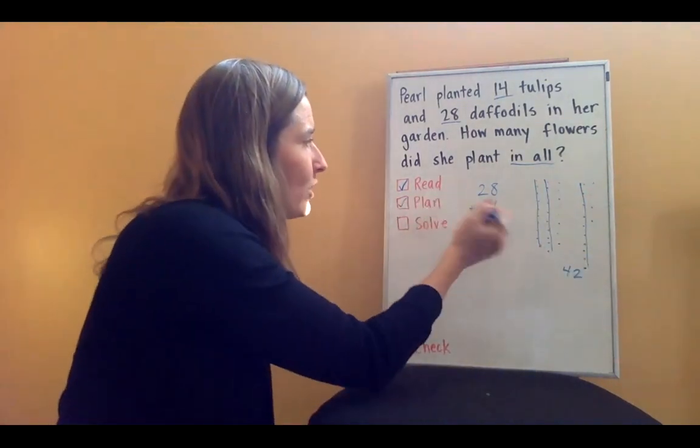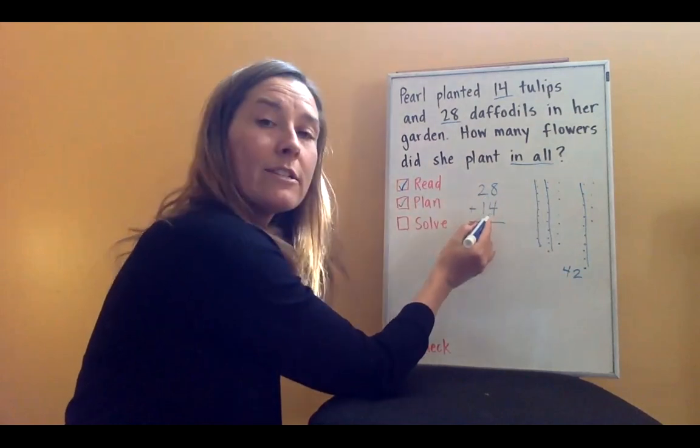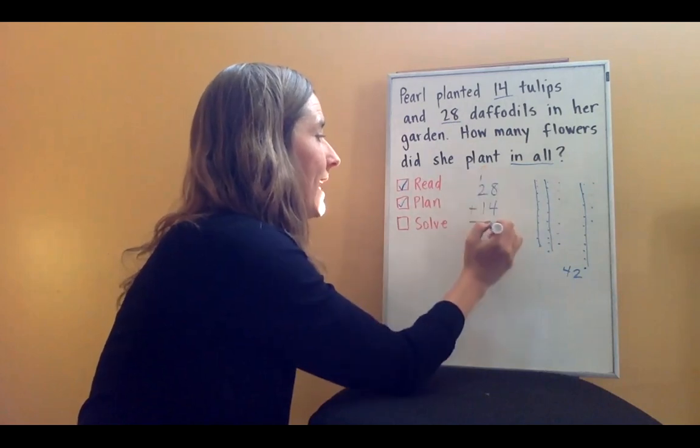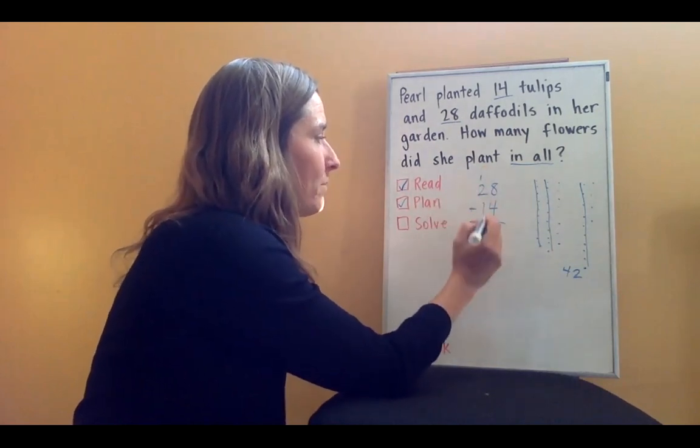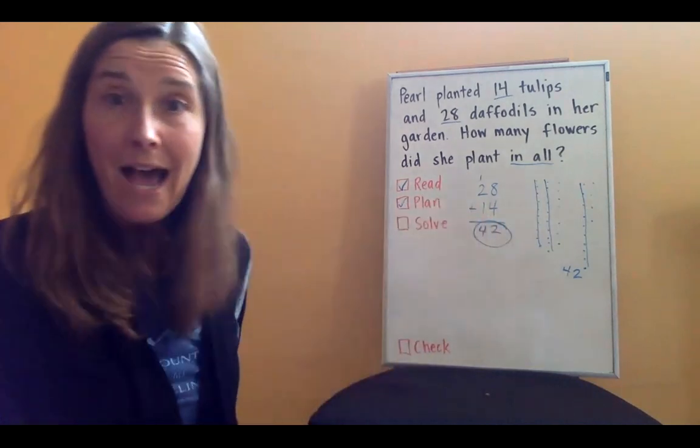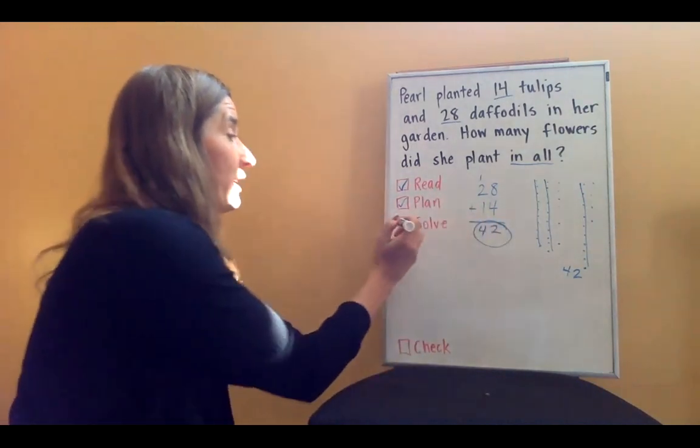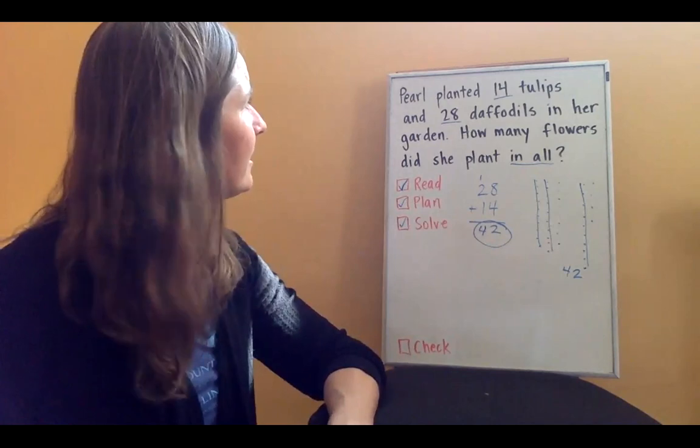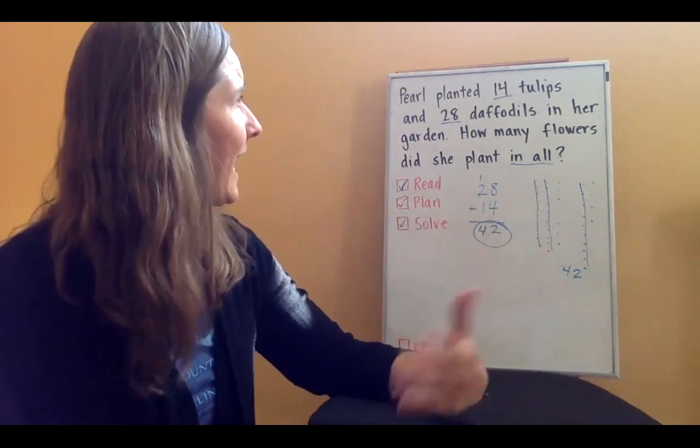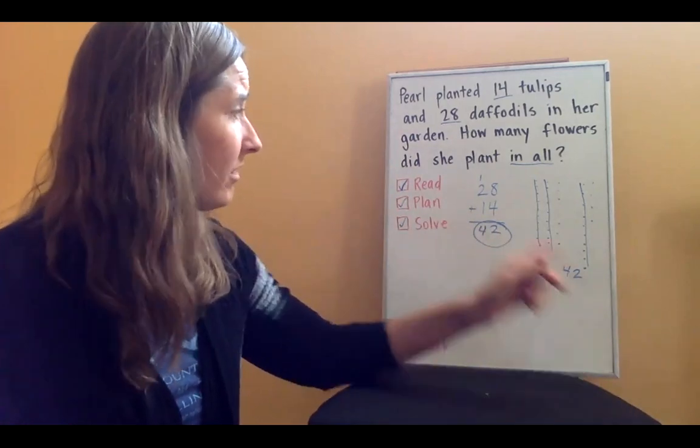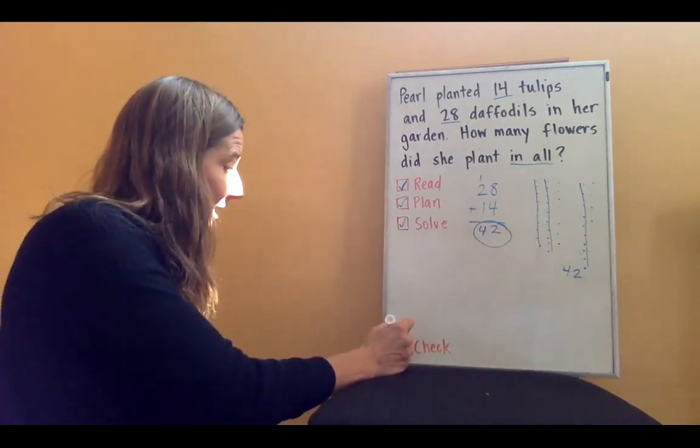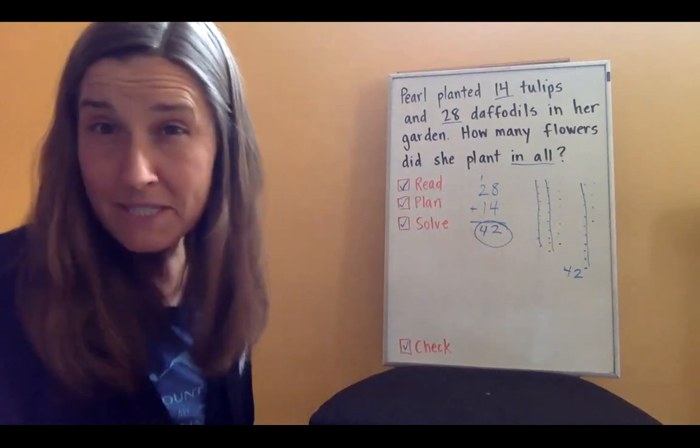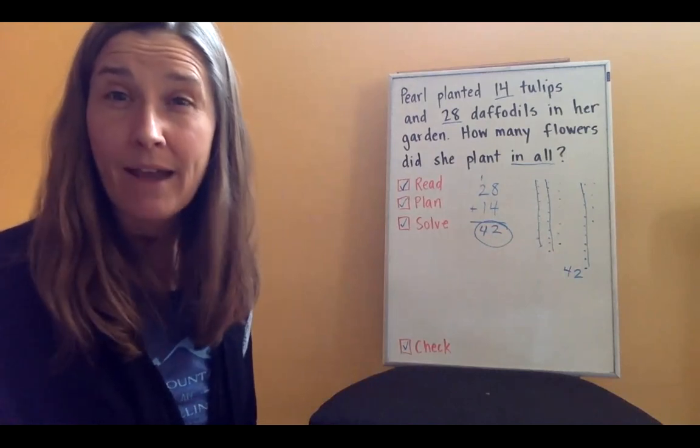I'm gonna check it with my number sentence, 28 plus 14. Eight plus four is 12. I know that I can't have 12. So I'm gonna exchange. I'm going to regroup my 10, which will leave me with two. Two plus one plus one is 42. All right, I got an answer of 42 flowers. So I'm gonna check my box for solve. And I'm gonna check my answer to make sure. Does this make sense? She planted 14 tulips and 28. How many in all? Well, 42 is definitely bigger than that. So I'm gonna say that this answer makes sense. I can have a grownup or an adult or even someone a little more advanced in math than I am to check my answer.